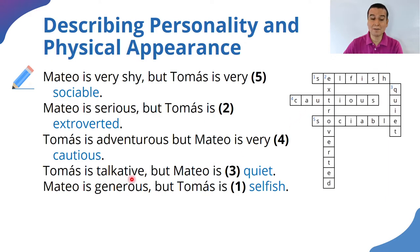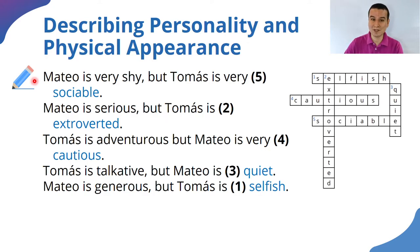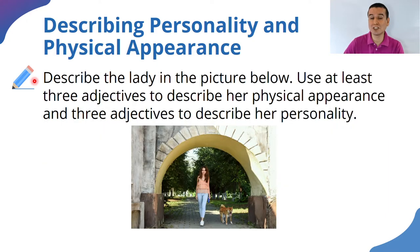Tomas is talkative but Mateo is quiet. Mateo is generous — that was a little tricky — but Tomas is selfish. Some people may say 'stingy' as an opposite of generous, but it doesn't fit in the crossword puzzle. I hope you have them all correct, or that you made the changes after I showed you the answers.